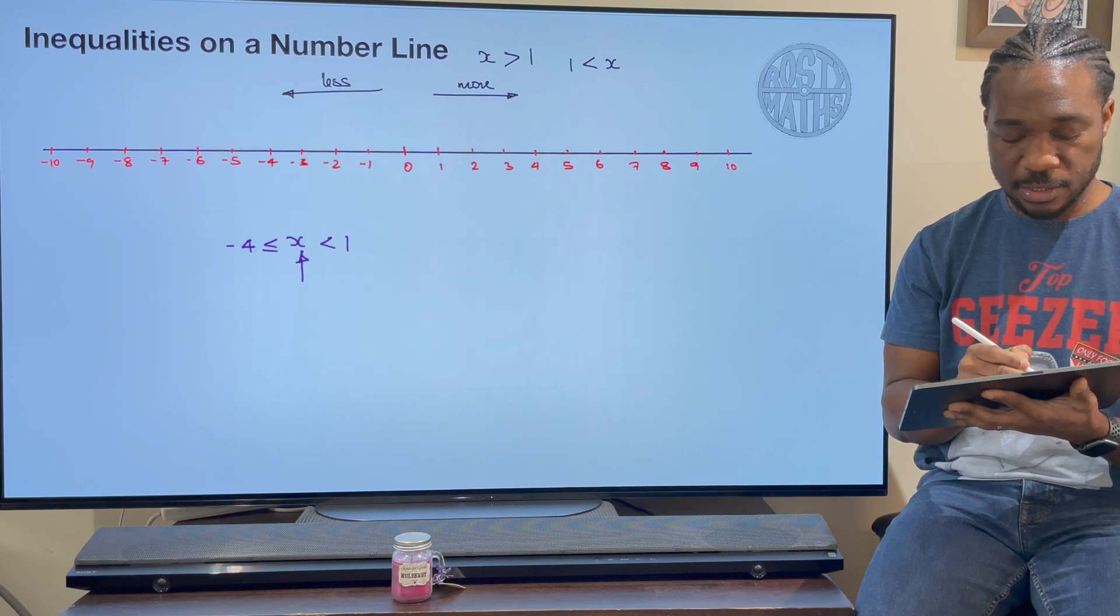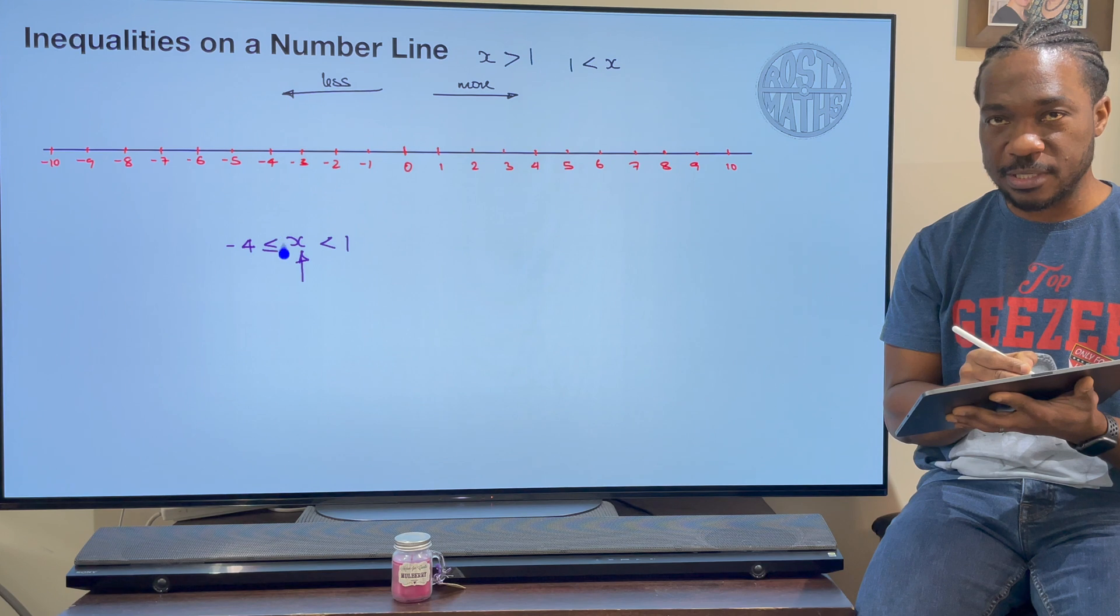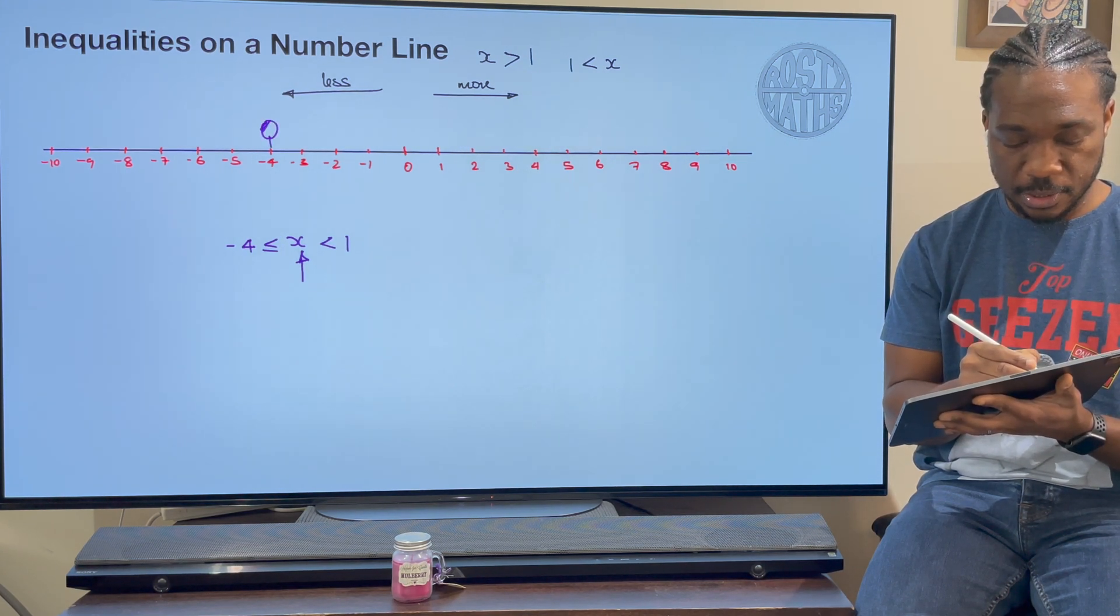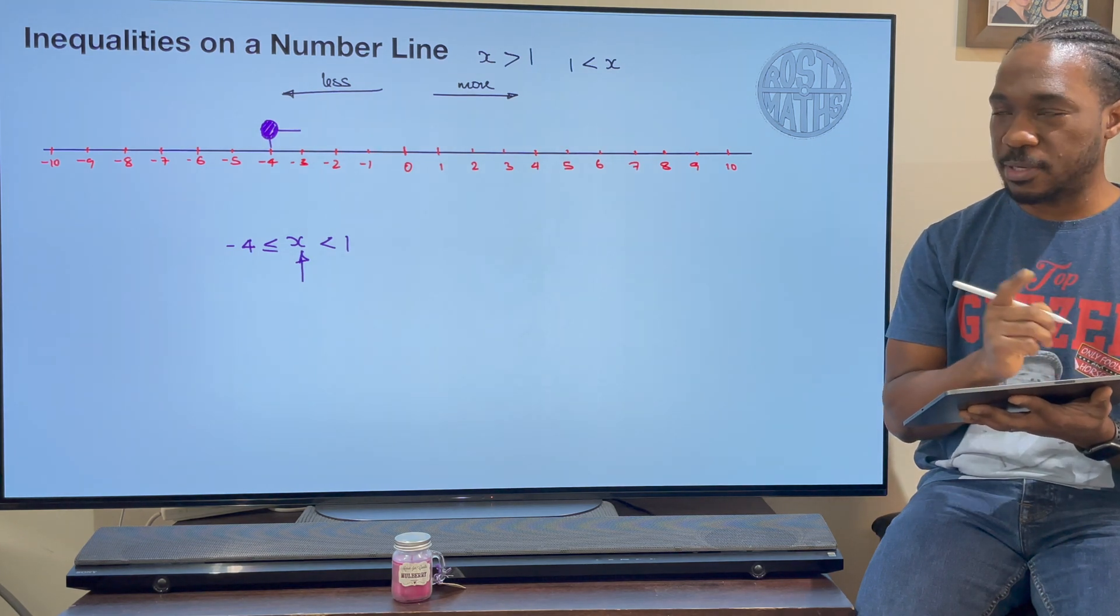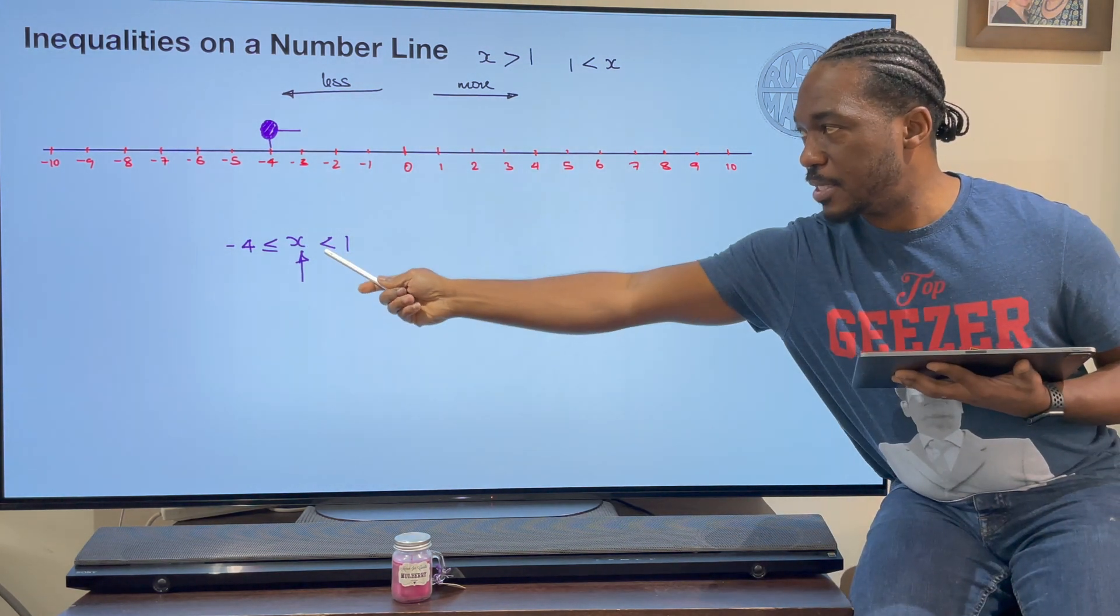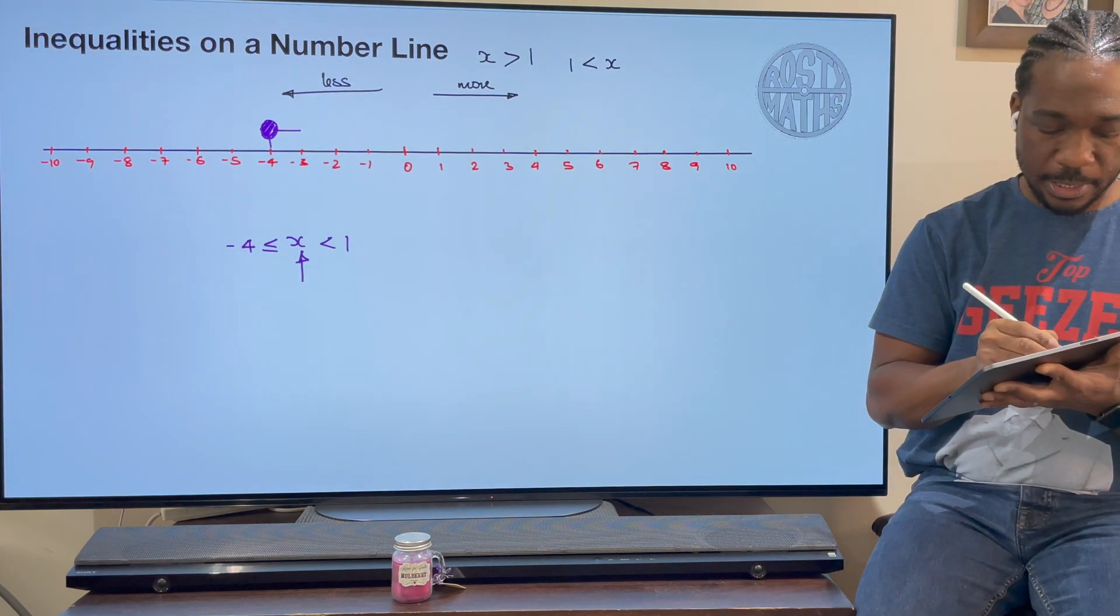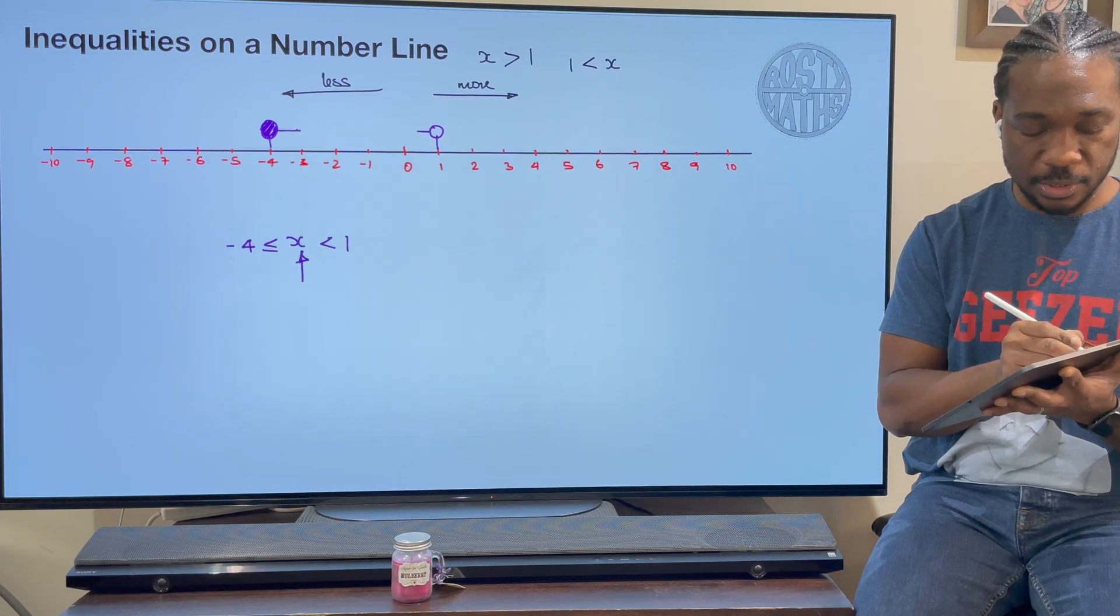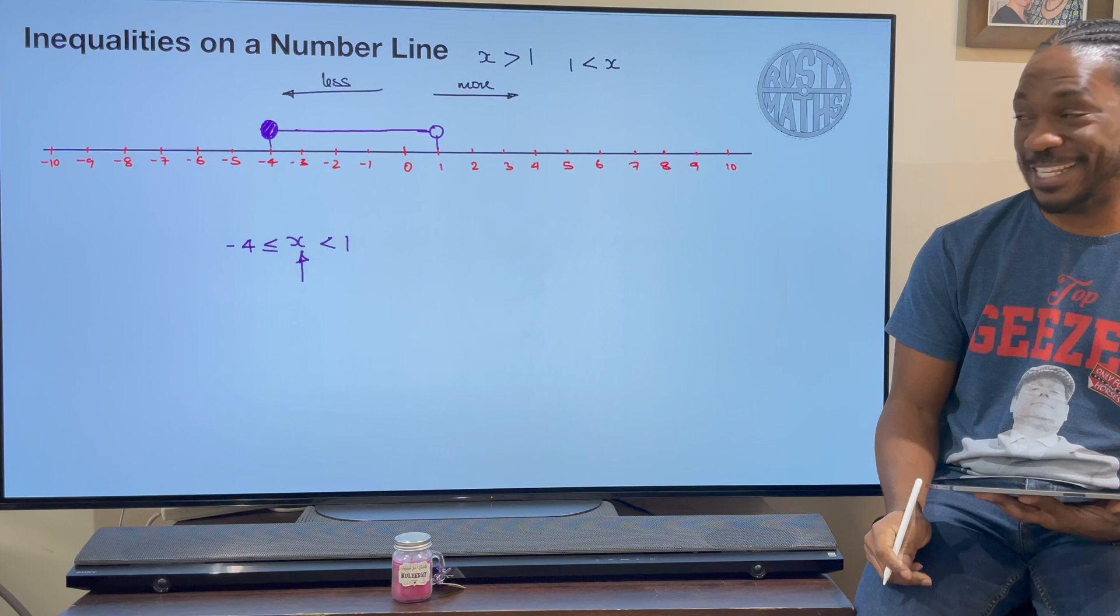When you read it from the middle, you start here. What you're actually saying is x is greater than or equal to negative 4, because the open side is facing x. So I'm going to go to my negative 4 and I'm going to color that in, and it's going that way. I'm not going to put the arrow on it yet. Go back to the middle again. X is less than 1. So go to 1 on my number line, and this time I'm not going to color it in, and it's going this way. So just come and join these two lines and that is finished. That's what one like this would look like.